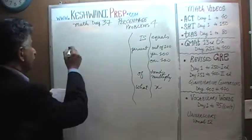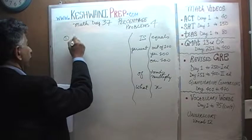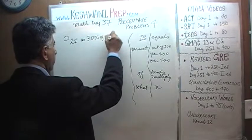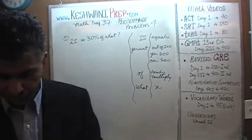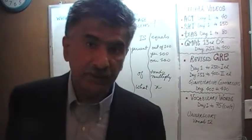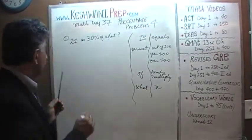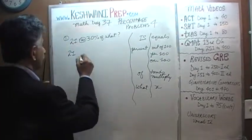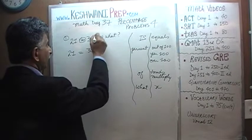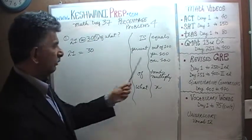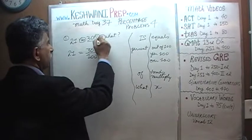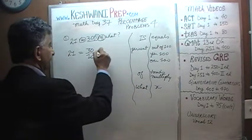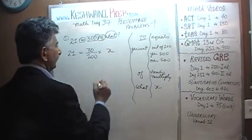The first problem we have is: 21 is 30% of what? We know how to set up the equation from that — we've been at it for a while. 21 'is' means equals. 30% means out of 100. The word 'of' means times or multiply. And 'what' is our unknown.